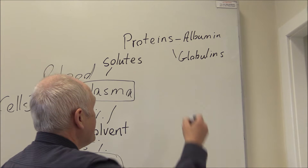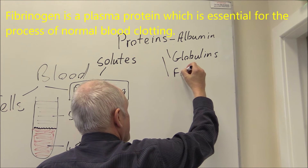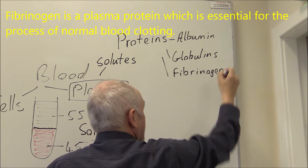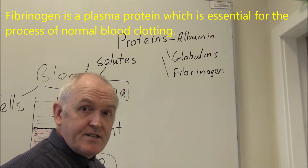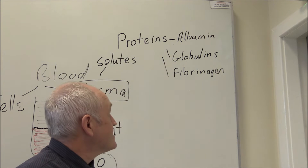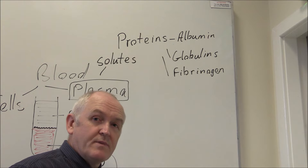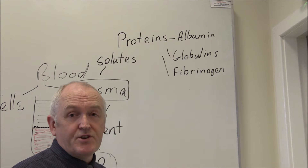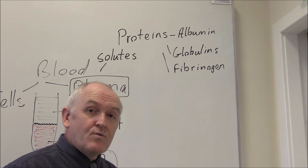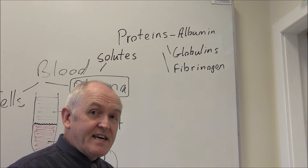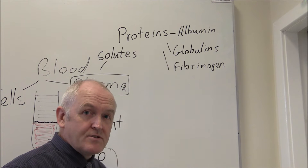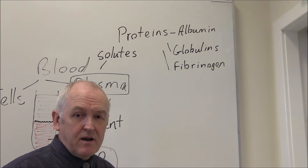Another protein we could mention is fibrinogen. Fibrinogen is the clotting protein. Under the right circumstances, fibrinogen, which is soluble in the plasma, will be converted to fibrin, which is insoluble and will form long sticky strands to which red cells and white cells will adhere, forming a clot.